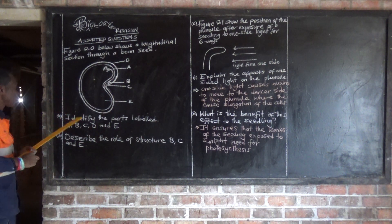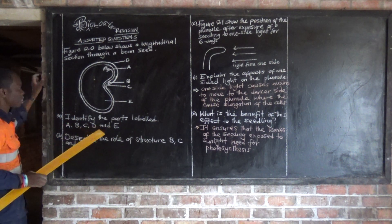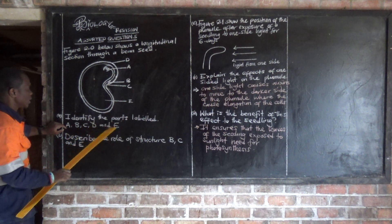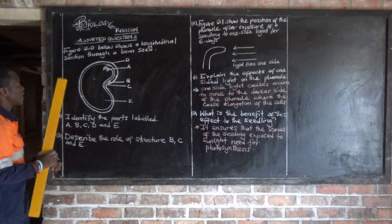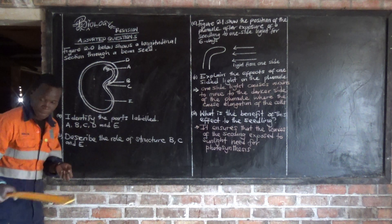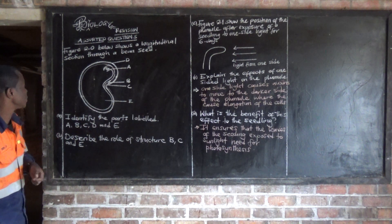Now the first question is saying: identify the parts labeled A, B, C, D, and E. So they want us to identify these parts of the pin seat.